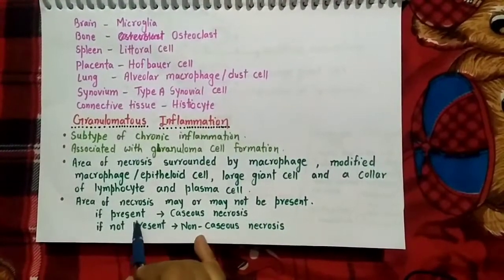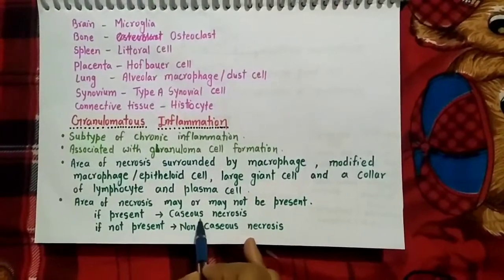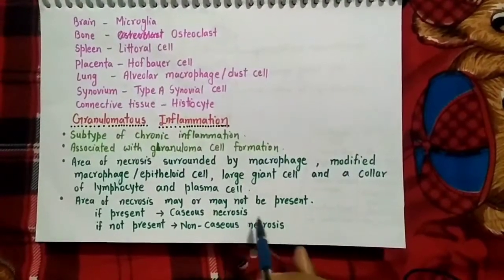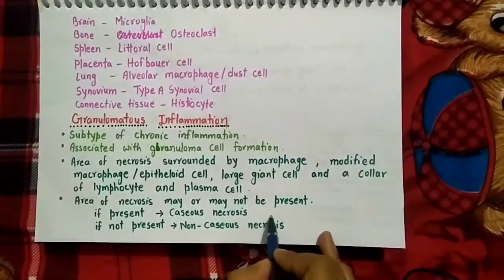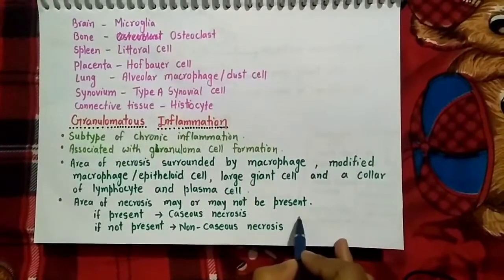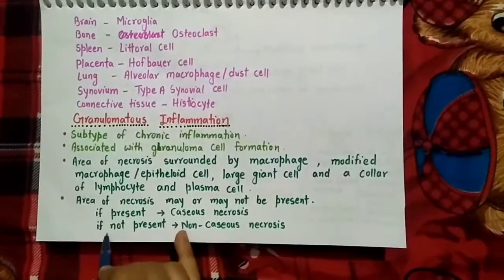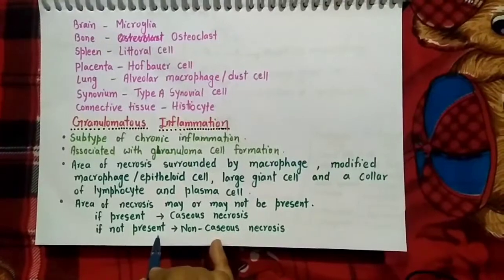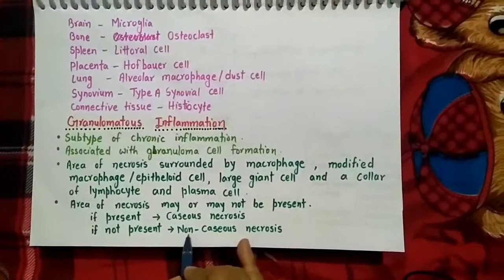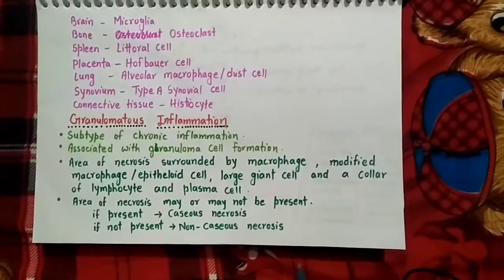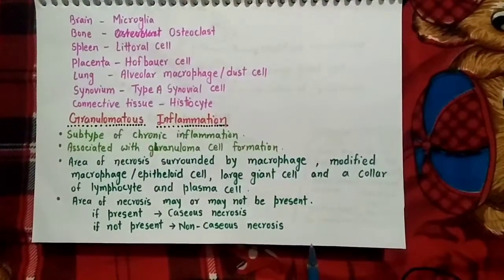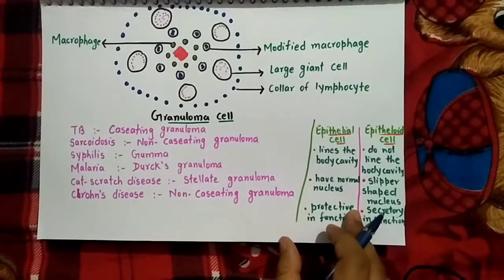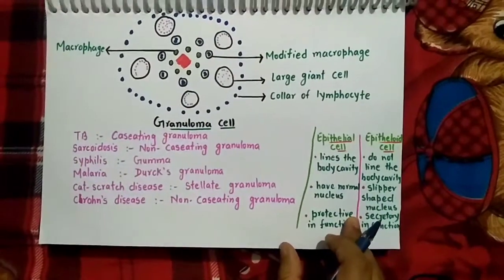If necrosis is present, it will be of caseous necrosis type and that granuloma will be called caseating granuloma. If necrosis is not present, it will be non-caseous necrosis and the granuloma will be called non-caseating granuloma.